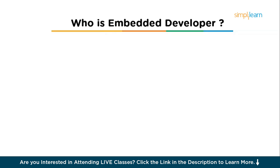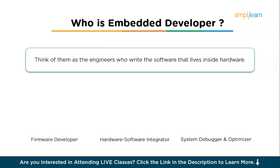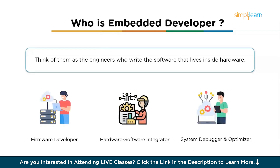First, let us understand what embedded systems are and who embedded developers are. Embedded systems are basically small computers built into other devices to do specific tasks — for example, a microchip inside your washing machine that controls the cycle, or the system in your car that manages the engine or airbags. These devices are called embedded because the computing part is hidden inside them. An embedded developer writes the software that makes these devices do their jobs correctly. If you build apps for phones, you're a mobile developer; if you build websites, you're a web developer; if you build code that runs inside machines and devices, you're an embedded developer.